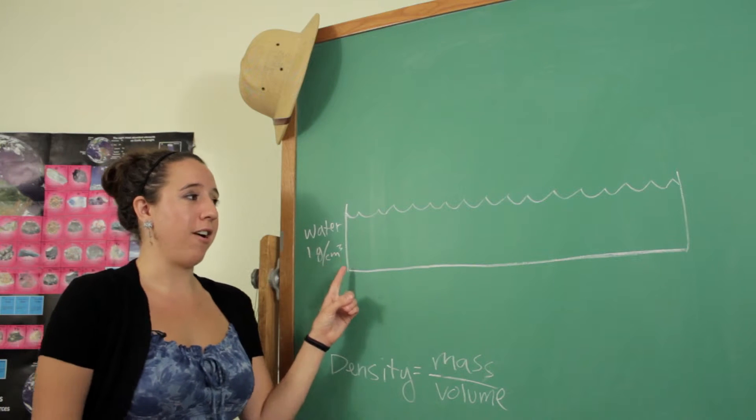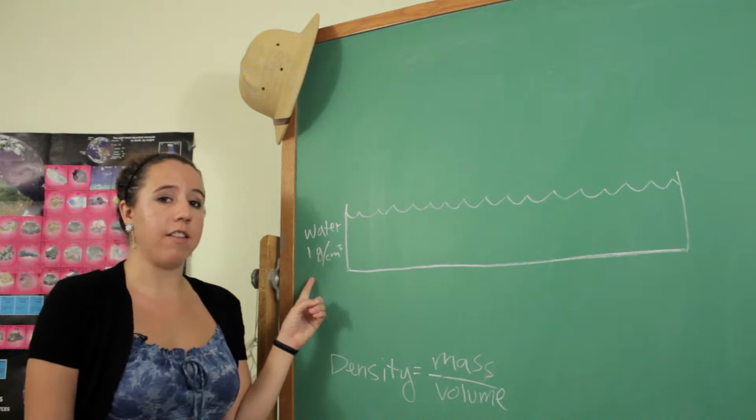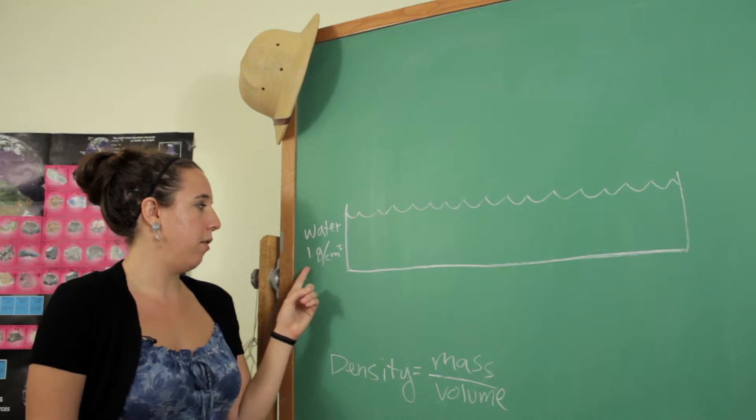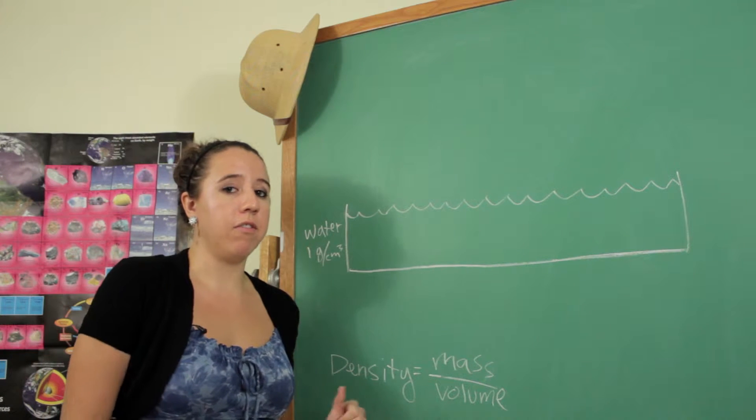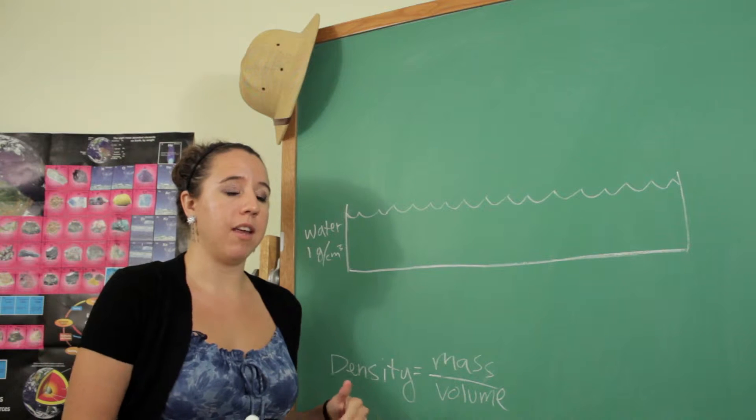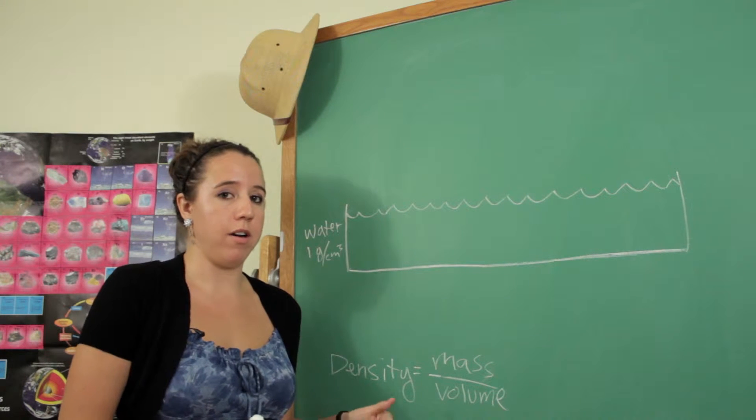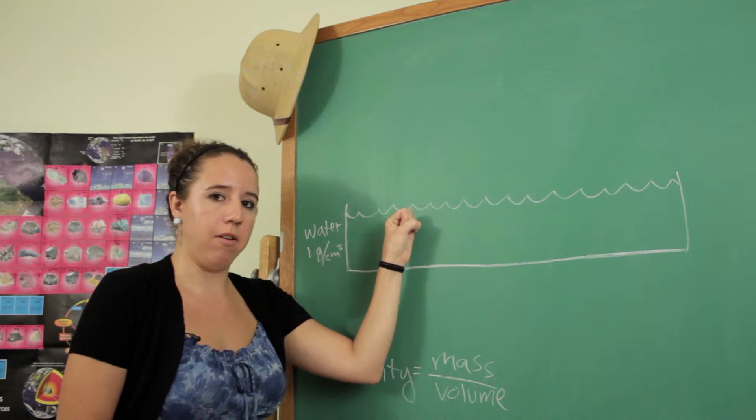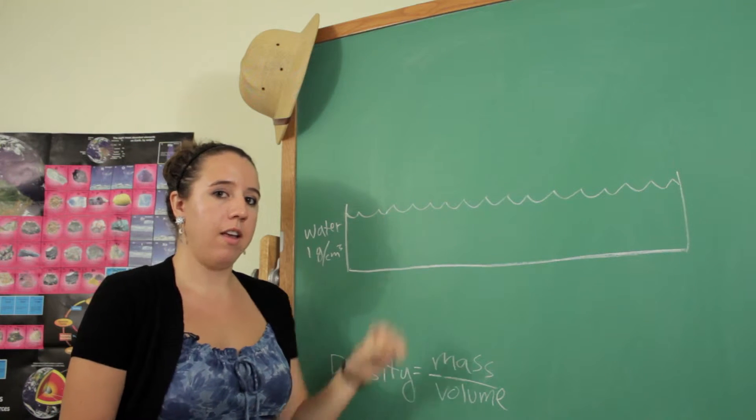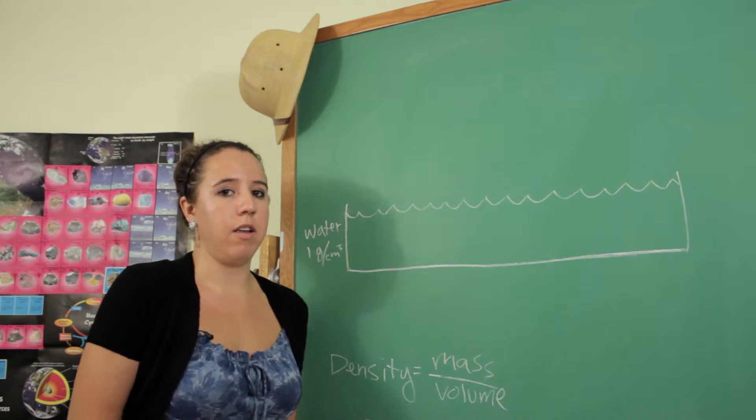So I started by drawing us a pool of water and defining the density of that water, which is going to be one gram per centimeter cubed. The rule of thumb for floating is that if something is less than the density of water, it will float. If it's the same, it will just kind of hang out neutral at any level that you put it at, and if it's more dense than water, it will sink.